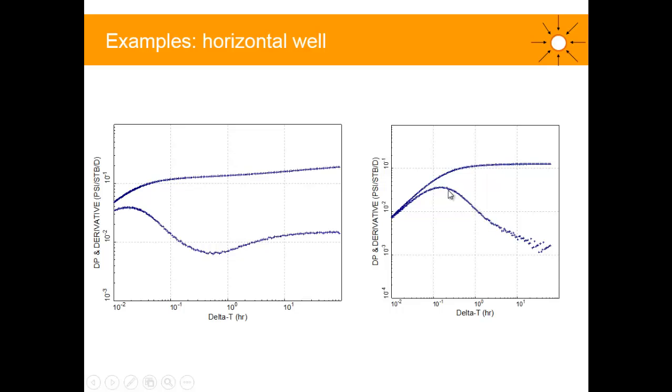And this is because, as we said for this case, the wellbore storage and skin mask this early time radial flow regime. This declining trend might be due to a small horizontal length, or a small KV, a small vertical permeability.